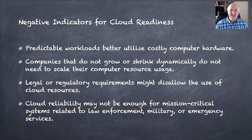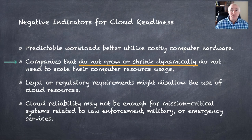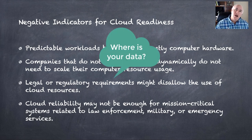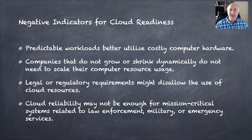Negative indicators. If you have predictable, very stable, flat workloads — you know exactly that every day is the same, the CPU usage is consistent, you know exactly how much network traffic you're running — you probably don't need a public cloud. You'd be better off just buying those resources and having a private cloud. Companies that do not grow or shrink dynamically do not really need to scale their computer resource usage. Legal or regulatory requirements can also get in the way. Some companies have legal requirements around privacy and reporting, and on the public cloud you don't know exactly where your data is. You may be required to keep it on your own private cloud servers. Cloud reliability is not always enough either — the cloud is reliant on the Internet, so if the Internet is slow, the cloud is slow, and outages or disruptions may cause you to lose access to the resources you need.